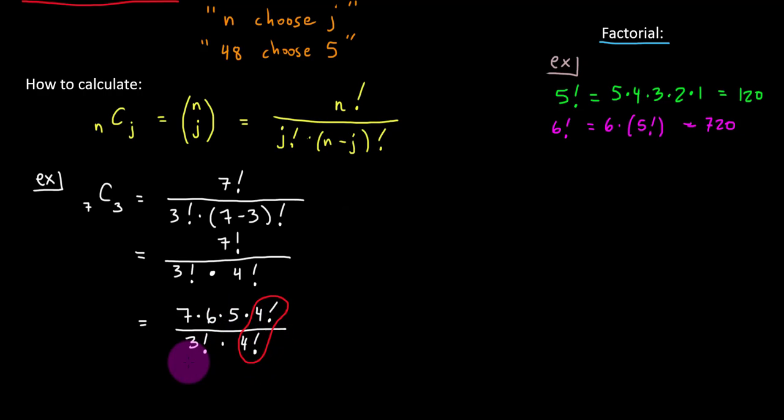I'm going to rewrite my numerator in a strategic way because I am anticipating a cancellation. 7 times 6 times 5 times, here it comes, 4 factorial. The cancellation here are these 4 factorials. That's a fancy one. So, all I am left with is 7 times 6 times 5 over 3 factorial. But wait, there's more. Isn't 3 factorial just a 6? Because 3 times 2 times 1. So, look what else can cancel here. The 3 factorial with that 6.